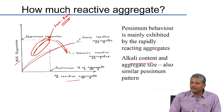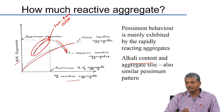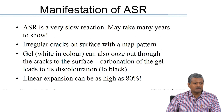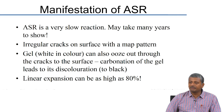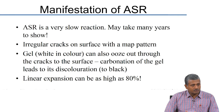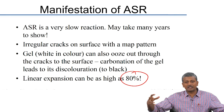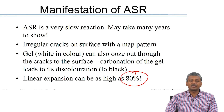You need to understand that you can get different scenarios with different types of aggregate, so testing is all the more important for ASR. There is nearly 80 to 90 years of research available, and people have done classification of different aggregate types based on their tendency to show such behaviour. ASR is very slow — it takes many years to show. Irregular cracks appear on the surface, gel sometimes oozes out and can transform to black on carbonation. Linear expansion can sometimes be as high as 80% on prismatic specimens.